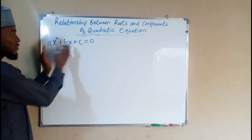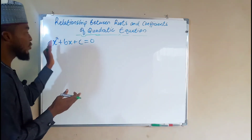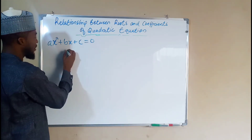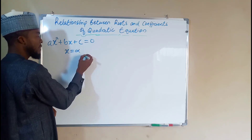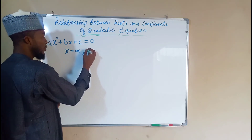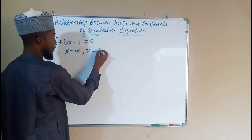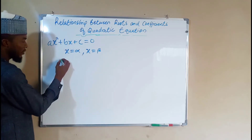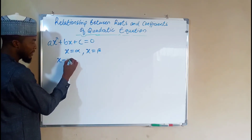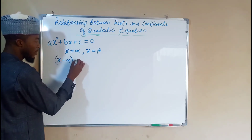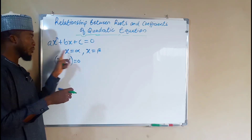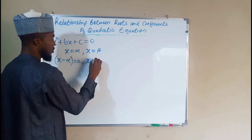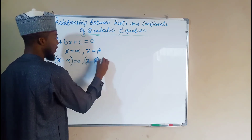So let's assume after solving this quadratic equation, which is ax² + bx + c = 0, we obtain the real values of x: the first root x = alpha and the second root x = beta. This can be transformed into factors: the first factor is (x - alpha) = 0, and the second one is (x - beta) = 0.